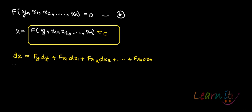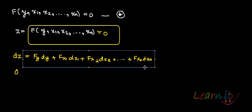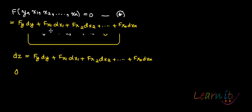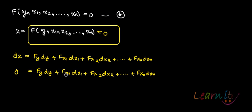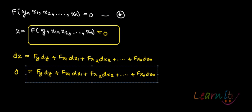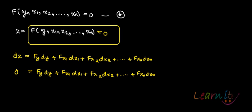Now, dz is equal to zero because z is always equal to zero. So this equation becomes 0 = f_y dy + f_{x1} dx1 + ... + f_{xn} dxn. If you need to find out the change in y due to the change in x1, you set all other differentials dx2, ..., dxn equal to zero.